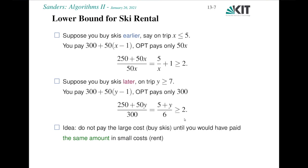I used very concrete values for renting and buying costs, but there's a general rule and you can easily generalize the proofs. The idea is that you do not pay the large cost of buying the skis until you would have paid the same amount in small costs — namely renting. In that case, 300 divided by 50 is 6. So basically you divide the buying cost by the renting cost, and then you get the number of times you should rent before you buy.